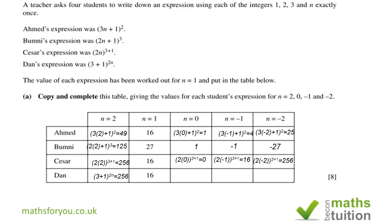For Dan continued: when n=0, 4 to the power 0=1. When n=−1, that's the same as 1 over 4², so 1 over 16. When n=−2, that's equivalent to 1 over 4 to the power 4, and the answer is 1 over 256. I hope all that made sense — now on to the next slide.